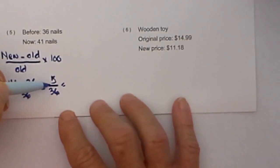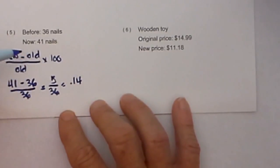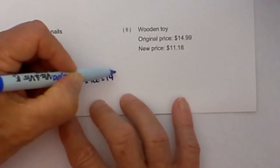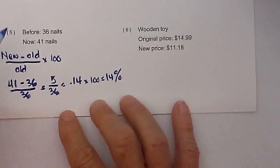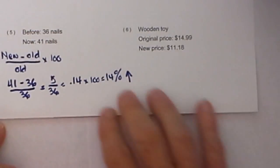You multiply that by 100, which equals 14%. Since it's positive and you went from 36 to 41, it's a percentage increase.